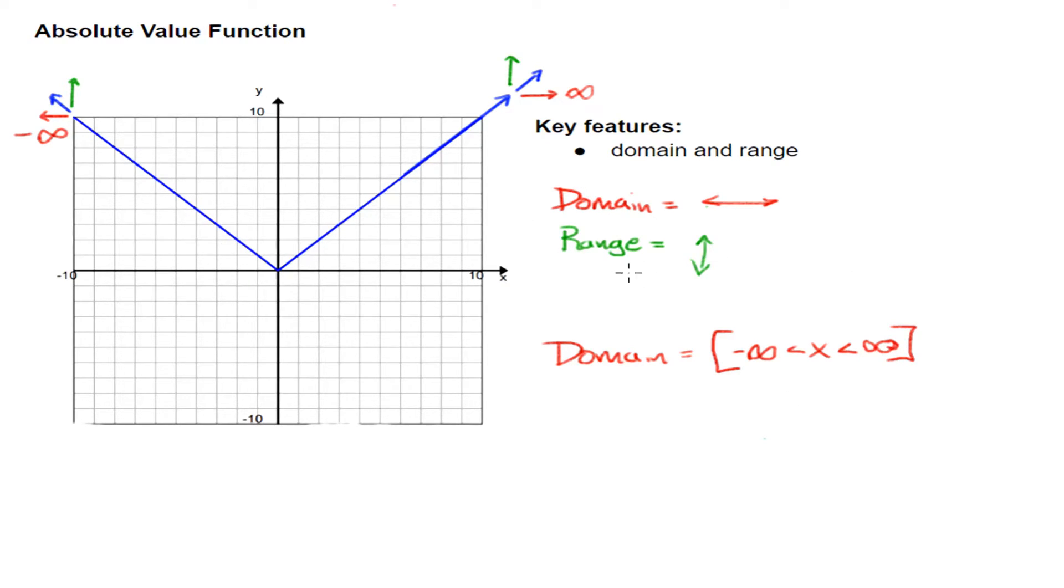Range for an absolute value function is a little bit more exciting. Here, I'm going up forever, so that's going to be positive infinity. So, I know positive infinity is my top value. What if I'm traveling down the line here? Do I ever go farther than this? The answer is no. So, my lowest value is going to be zero. So, my range is going to be defined as zero is less than or equal to y, because right here at the vertex, it does in fact touch zero, and y is less than infinity.